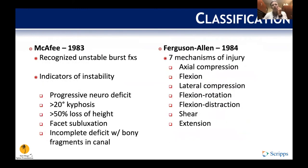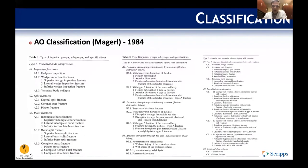As we evolved through the 1980s, McAfee and Ferguson helped develop a better understanding of instability indicators: progressive neurologic deficit, kyphosis greater than 20 degrees, 50% height loss, subluxation of the facets, or an incomplete deficit with bony fragments in the canal. These suggest an unstable injury. Evaluating the mechanism on CT helps answer whether this is an unstable injury that needs intervention. Seven mechanisms are described.